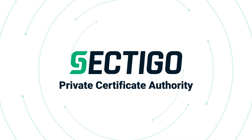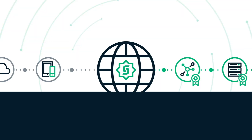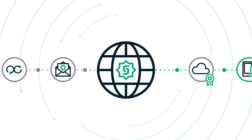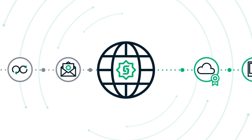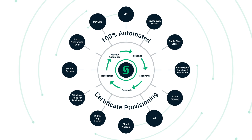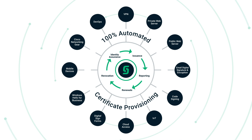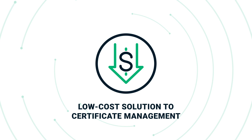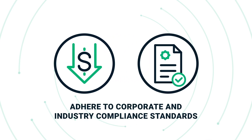Sectigo's Private CA augments the Microsoft CA. By filling in the gaps, the Sectigo Private CA ensures certificates utilized by the enterprise are properly managed. Private CA and Certificate Manager are features of the Sectigo Enterprise solution. Through Sectigo Certificate Manager, IT administrators can manage the entire life cycle of public and private certificates from a single pane of glass. Private CA is a low-cost way for organizations to secure and manage their certificates while adhering to corporate and industry compliance standards.